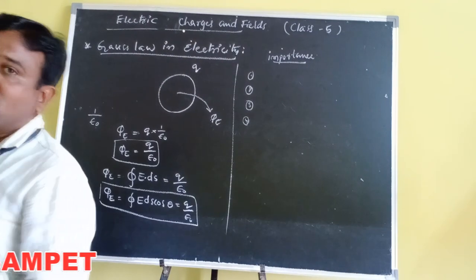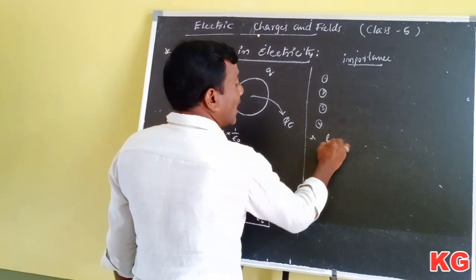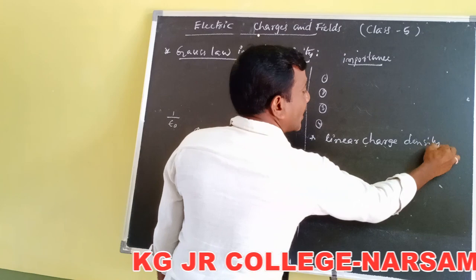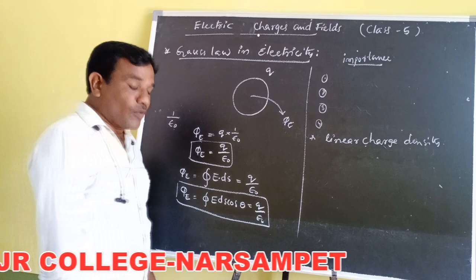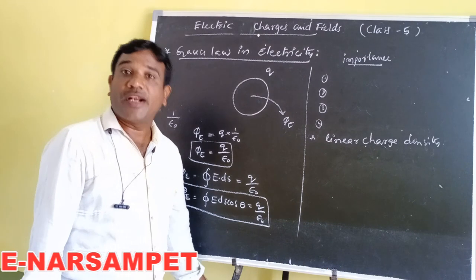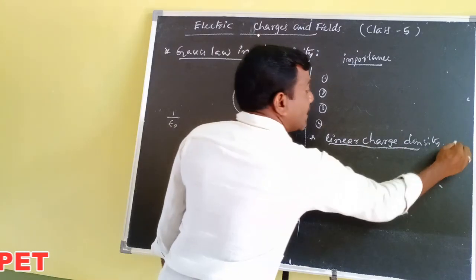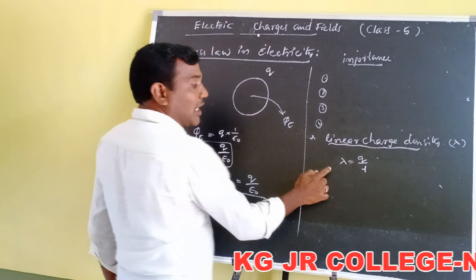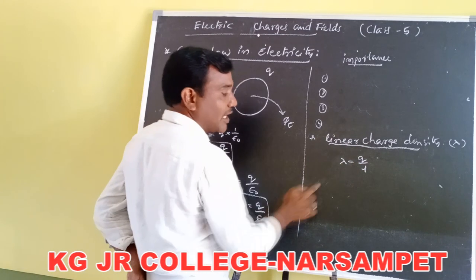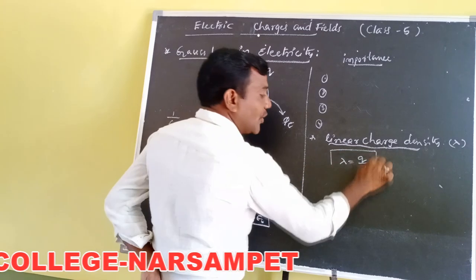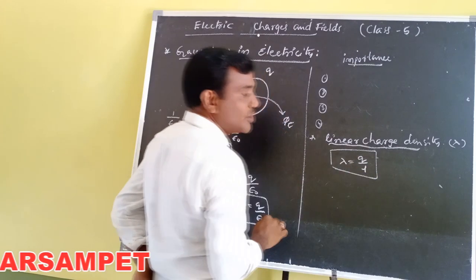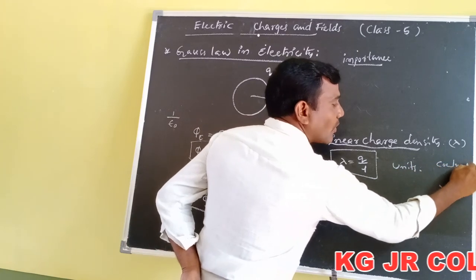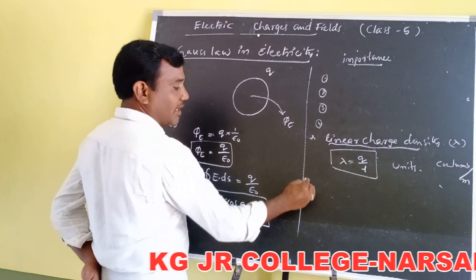Now we discuss some simple definitions important for Gauss's Law. The first is linear charge density. The charge per unit length of a conductor is known as linear charge density, denoted by lambda (λ). Then λ = Q/L. The unit of linear charge density is coulombs per meter (C/m).